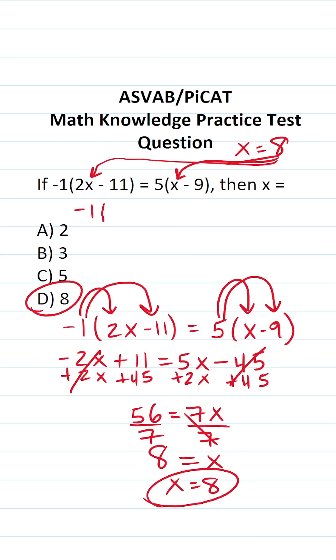So this becomes negative 1 times 2 times 8 minus 11 equals 5 times 8 minus 9. Let's work out what's in parentheses first.